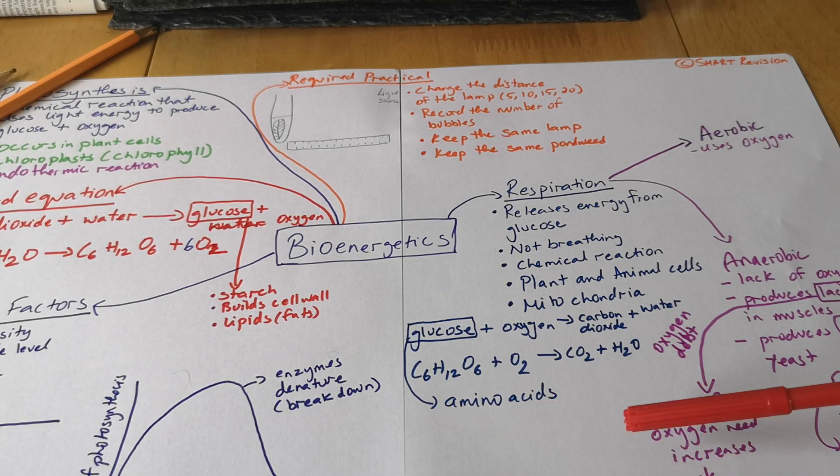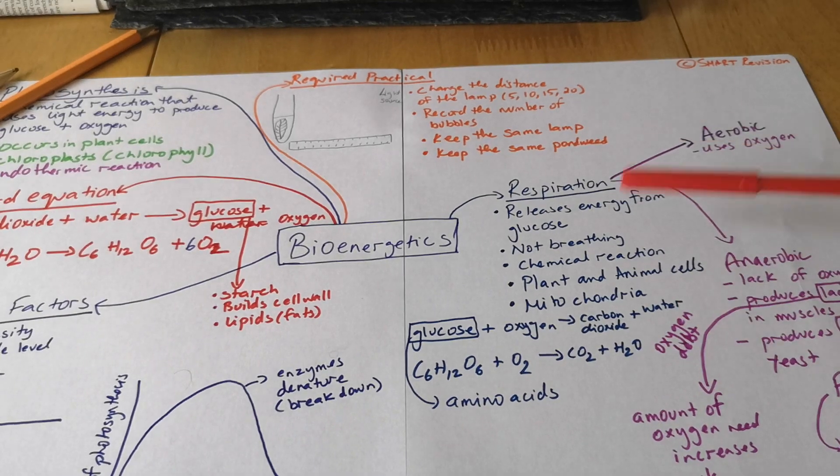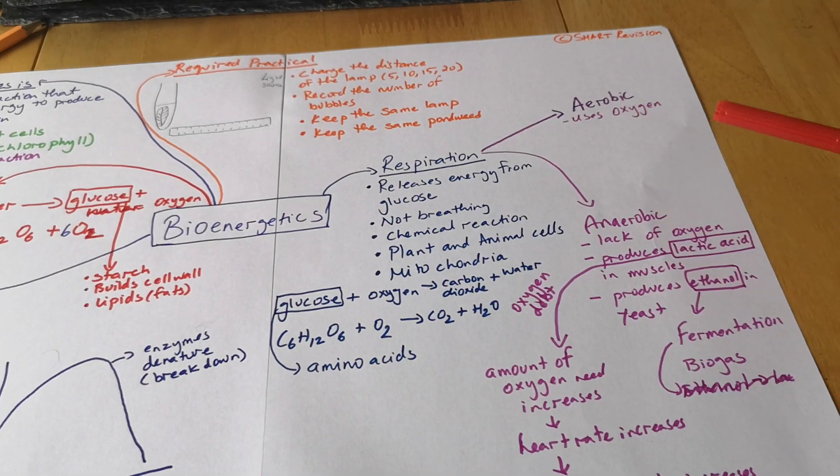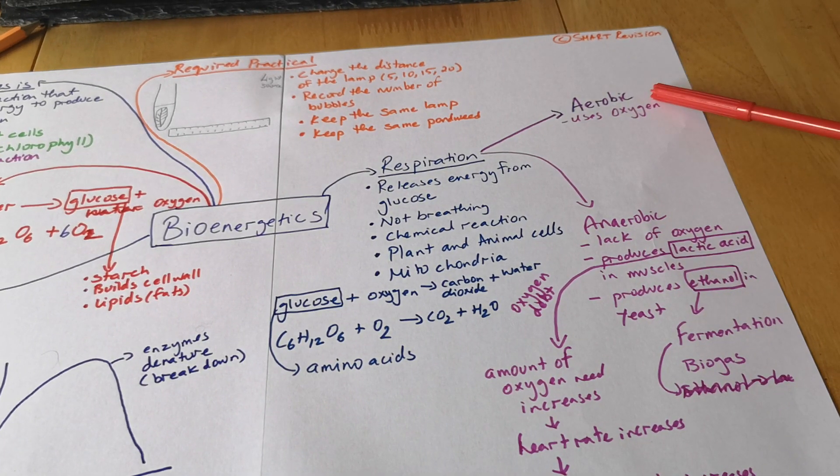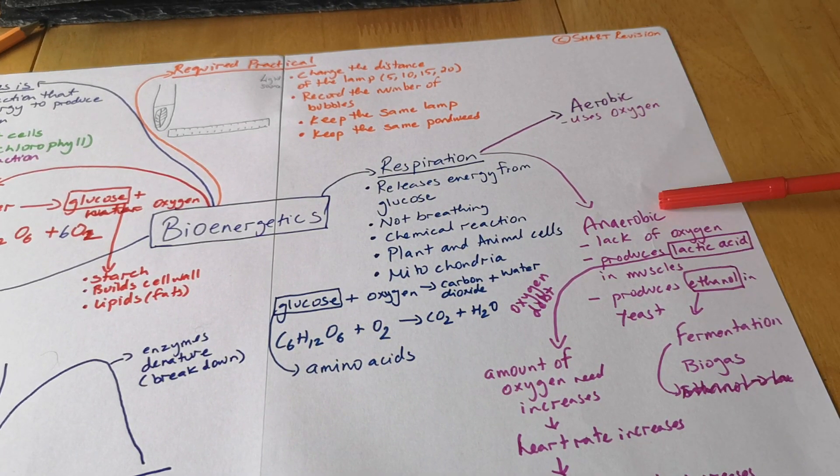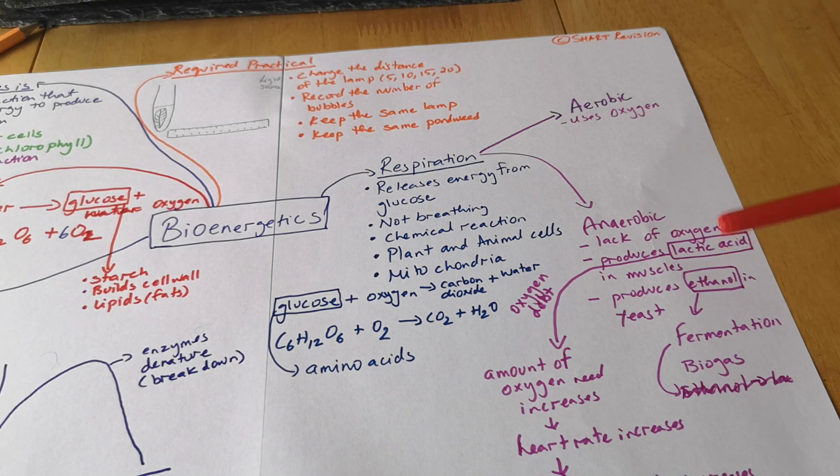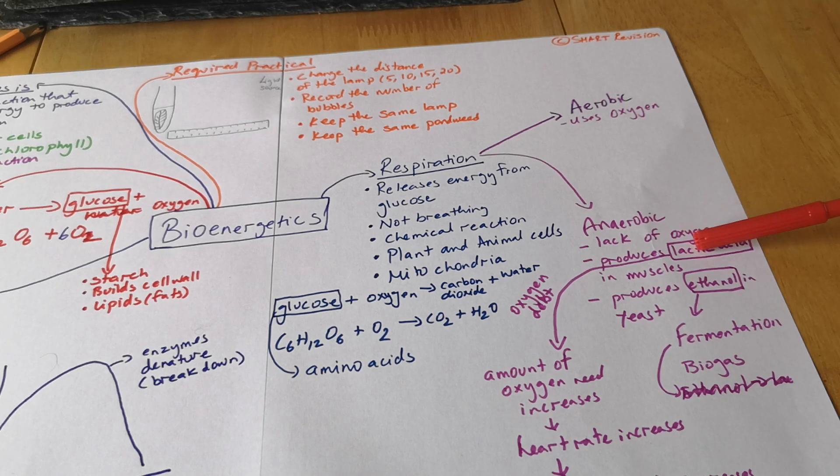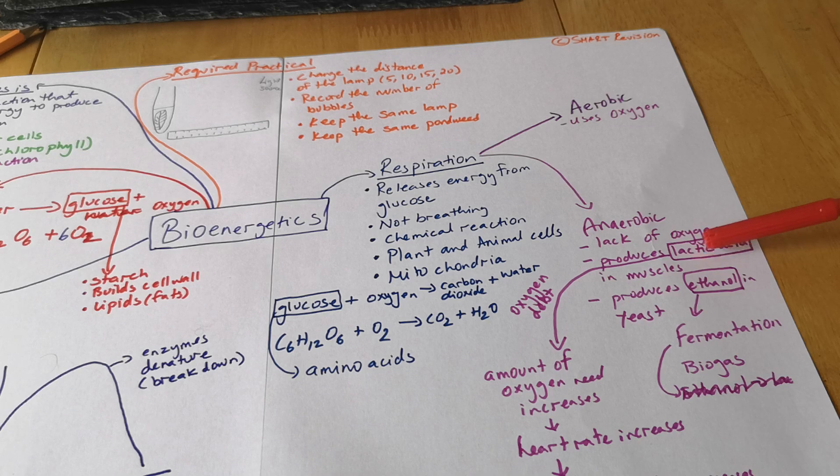Now respiration splits into two: aerobic and anaerobic respiration. Aerobic, it uses oxygen. Anaerobic, lack of oxygen, so less oxygen. Now in anaerobic it produces lactic acid. So if you go for a run then you start producing lactic acid because there's an oxygen debt, you can't get a lot of oxygen to the muscles.